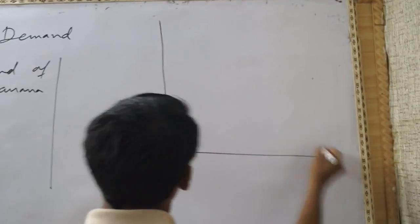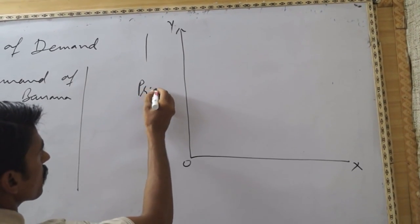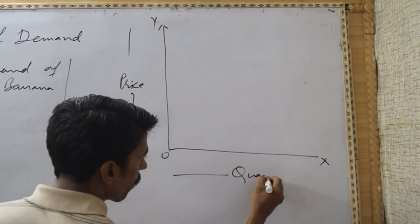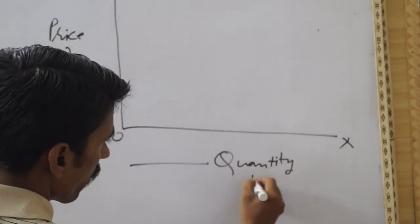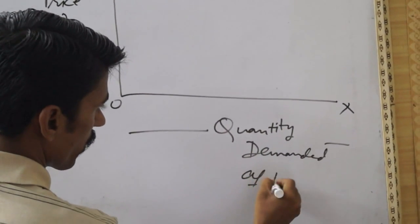This is the y-axis, this is the x-axis. We show the price at this point and the quantity demanded of banana here.